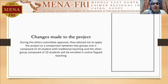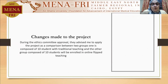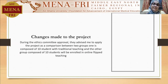The changes made by the ethics committee were to make the project a comparison study between 10 students from traditional teaching and another 10 students enrolled in the online flipped teaching, in order to be statistically valid. This is also because postgraduate students are always a small group each term, so 10 students is the least number I can enroll in my project.